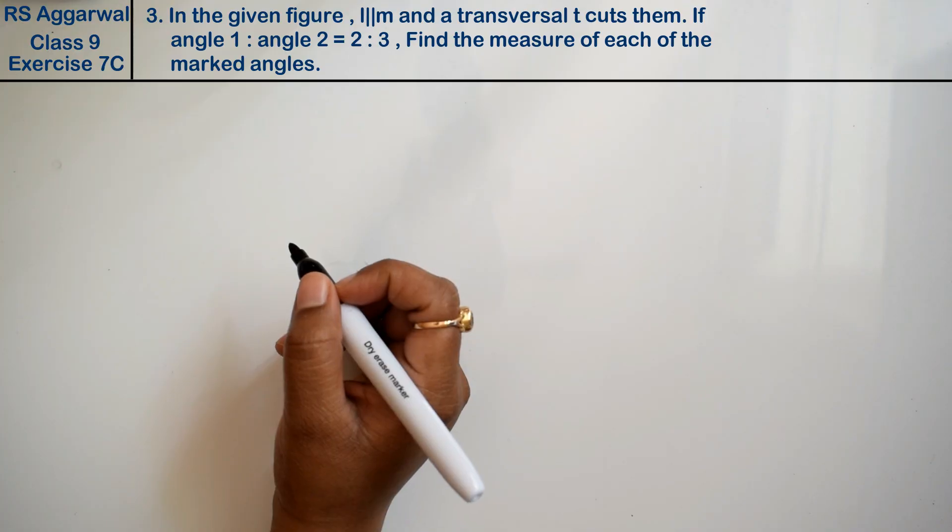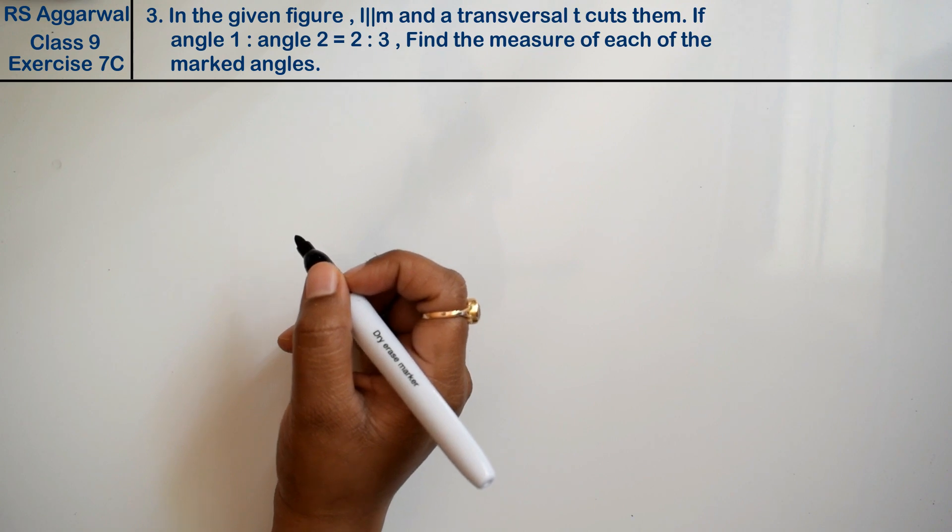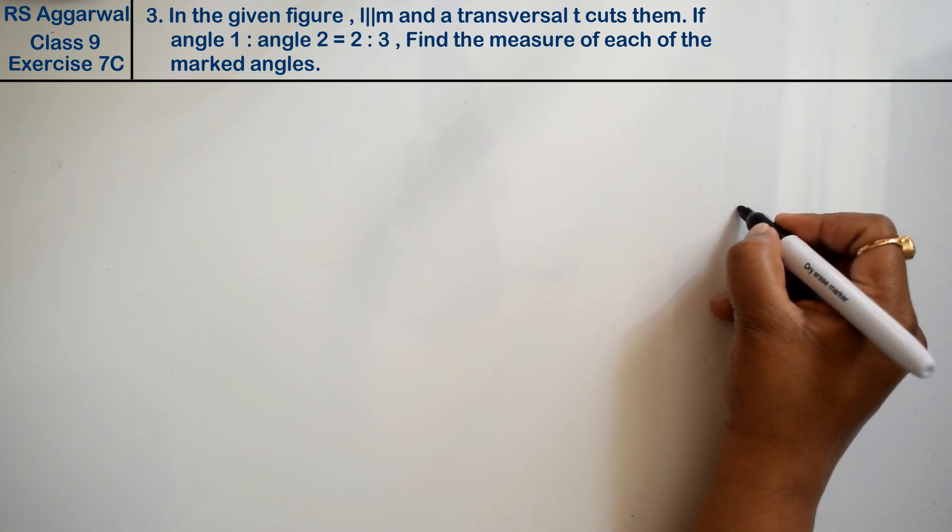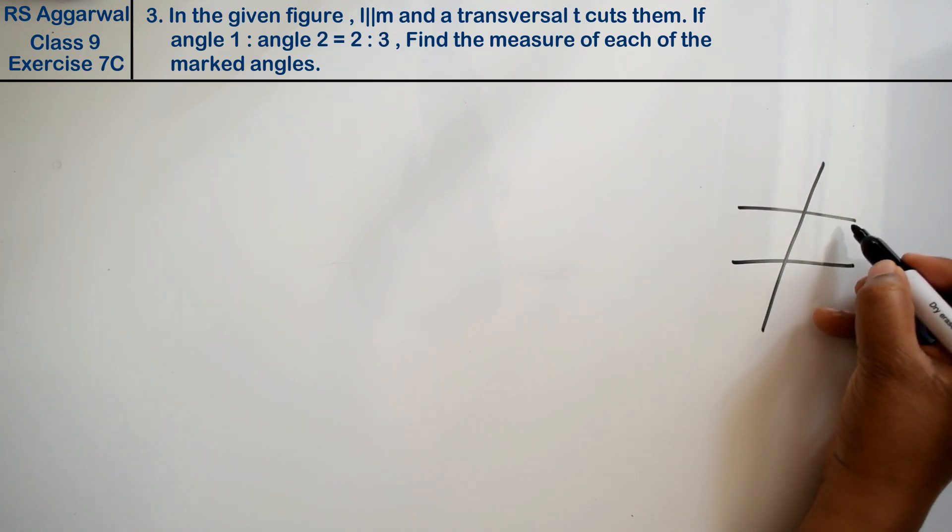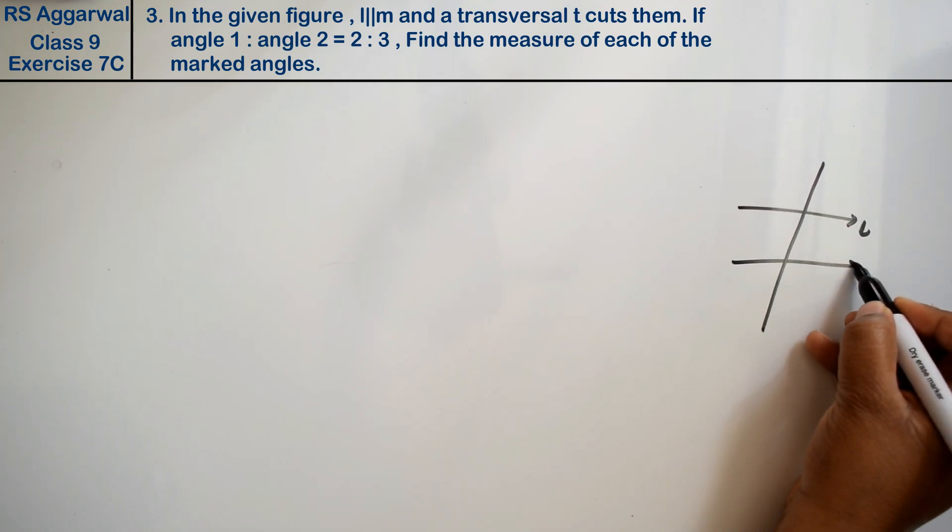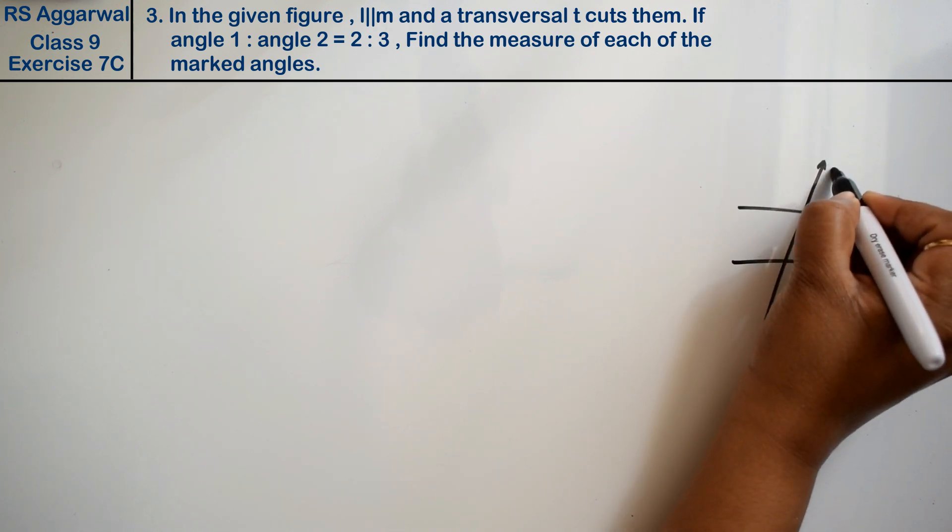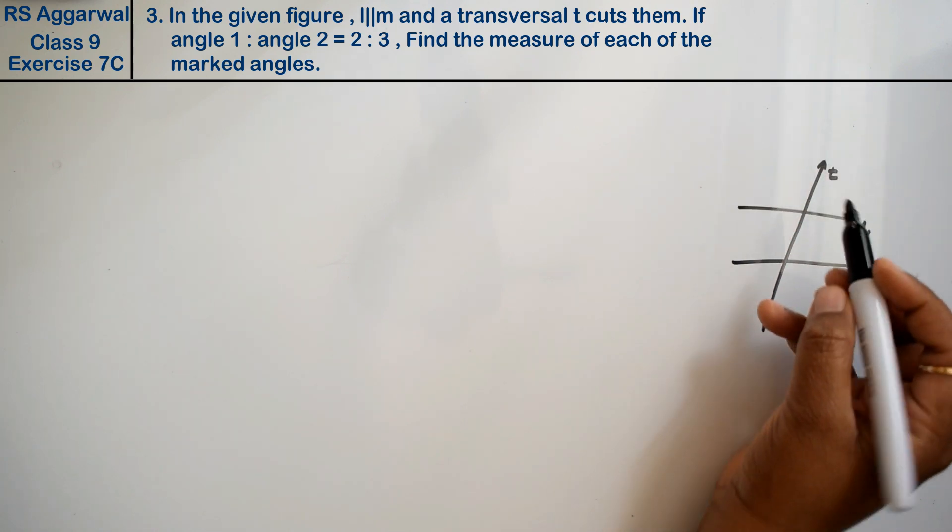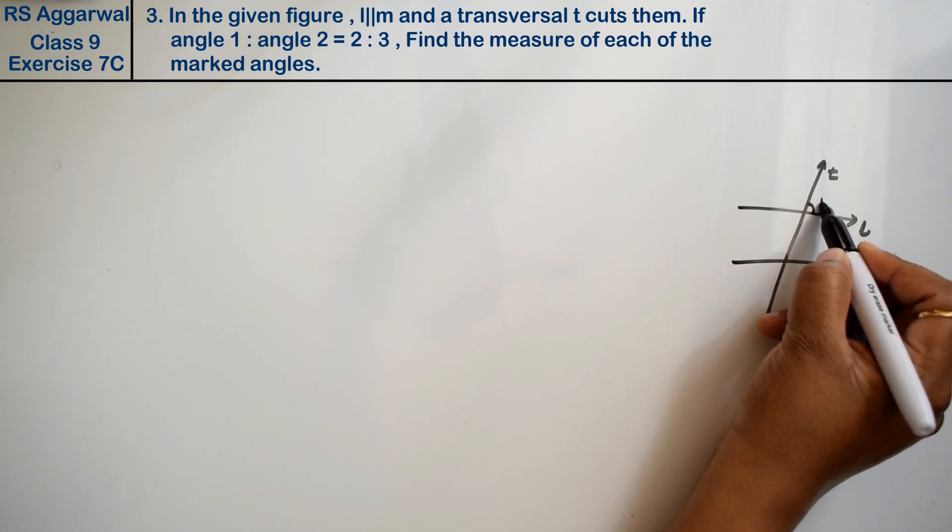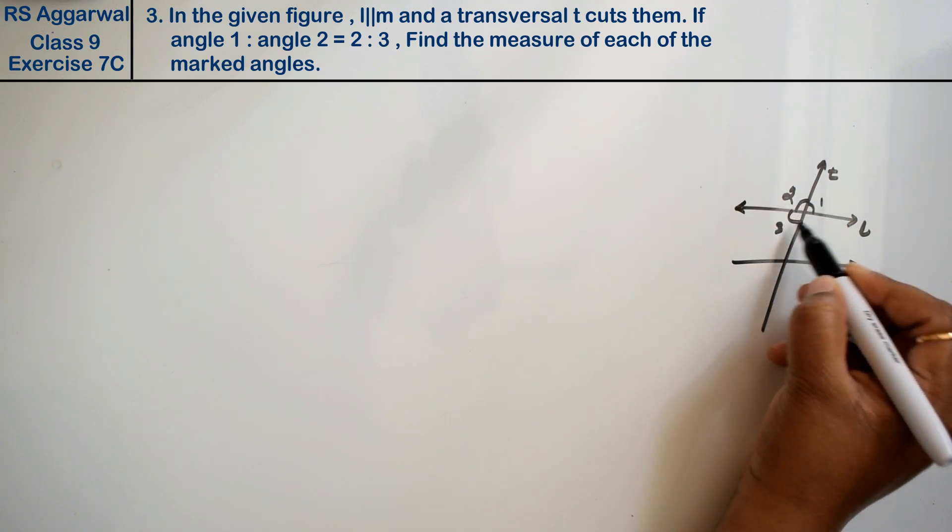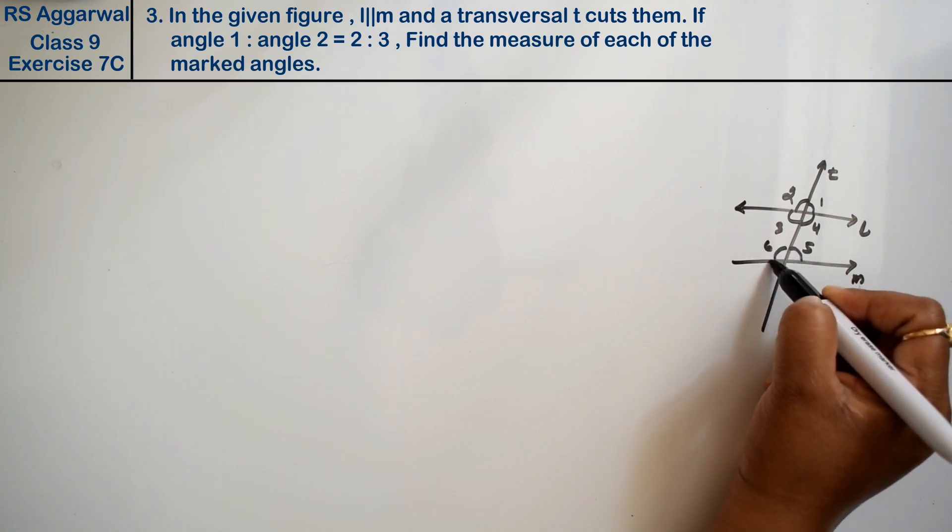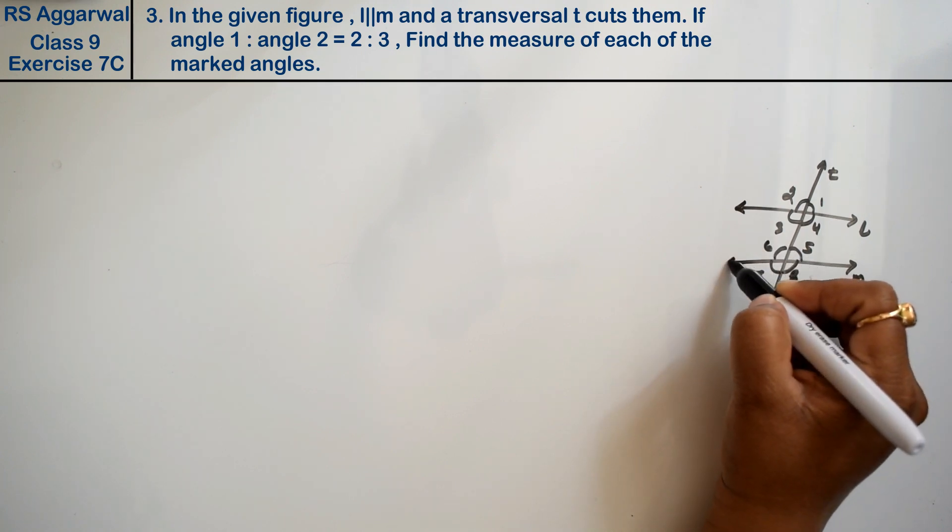Let's do question number 3 of exercise 7C, lines and angles. In the given figure, there is a figure with line l, line m, and a transversal t. How many angles? 1, 2, 3, 4, 5, 6, 7, 8. Right.